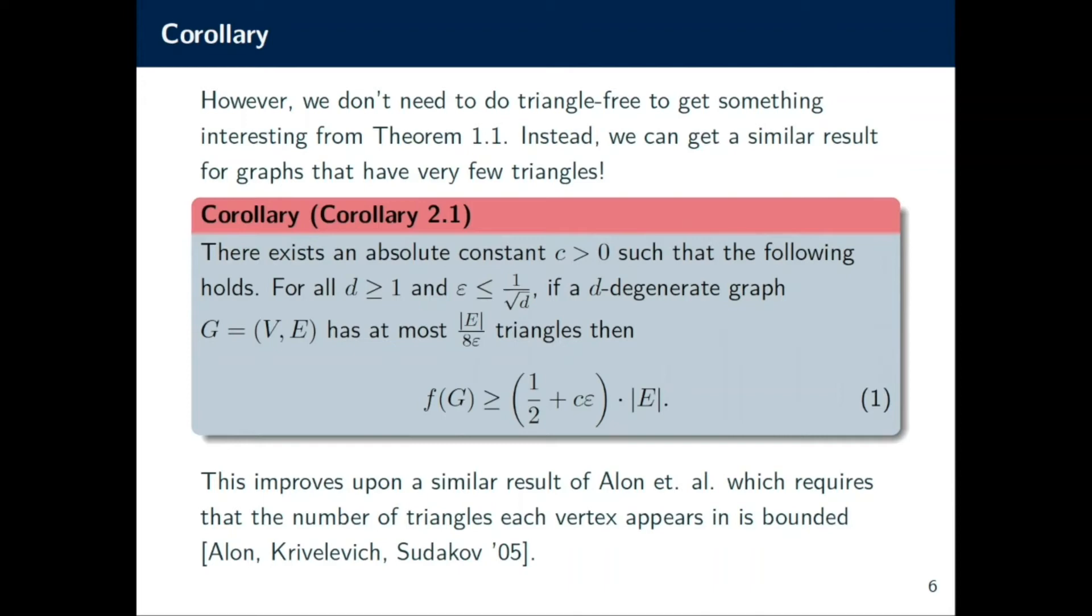Namely, we can get f(G) is at least 1/2 + c for some constant c, epsilon times |E|, where epsilon is allowed to be at most 1/√d.